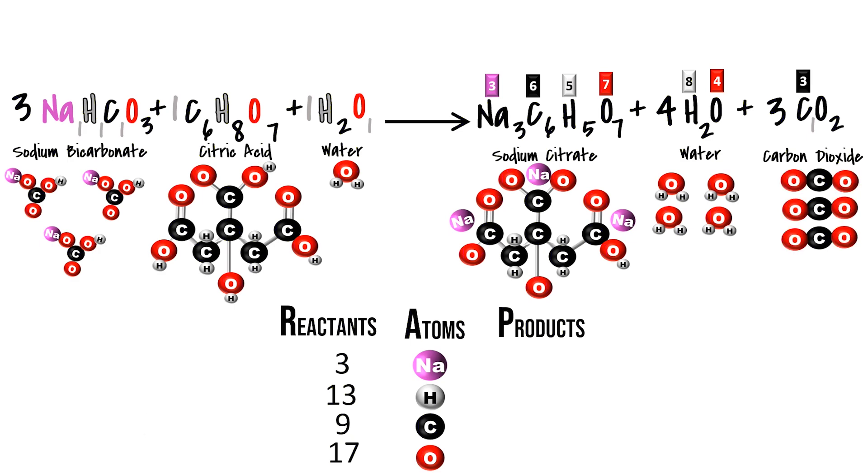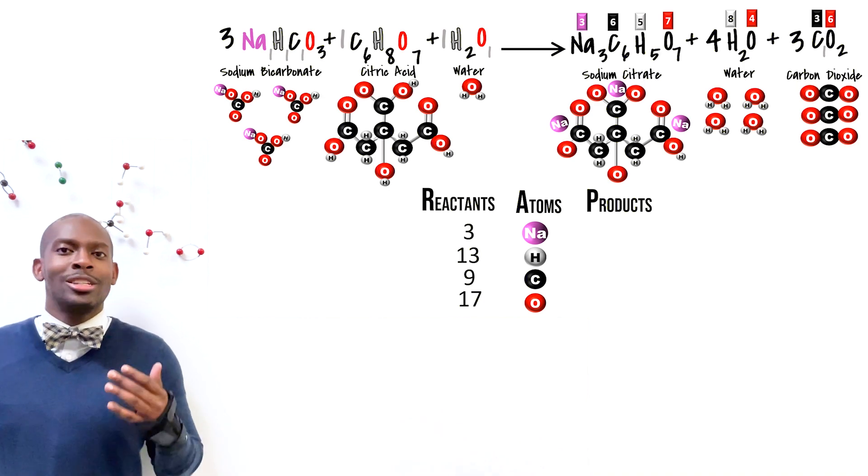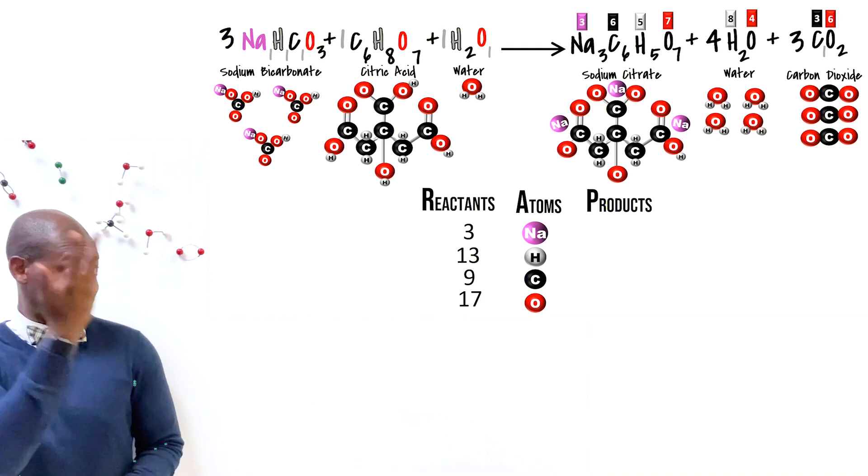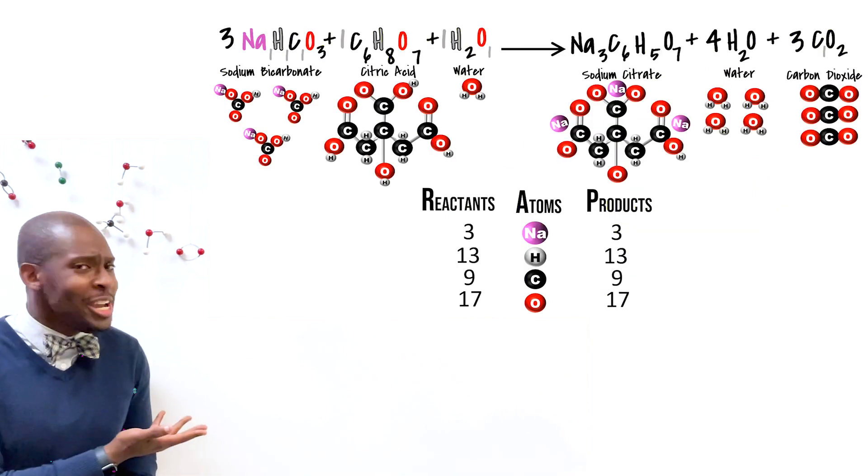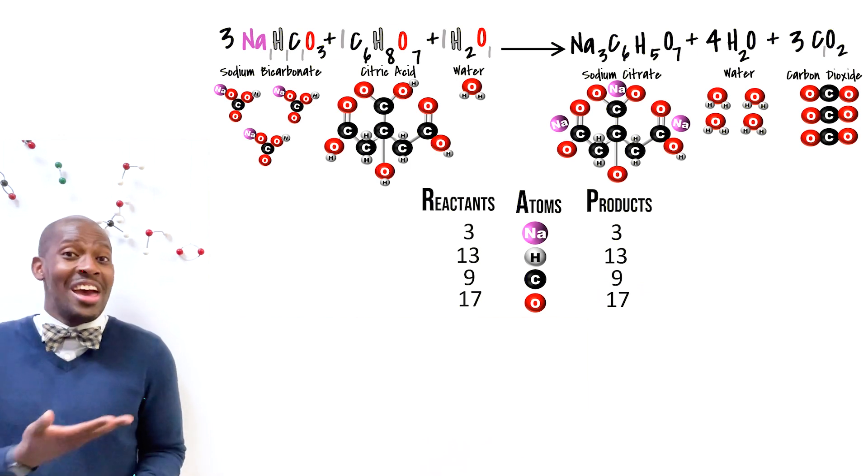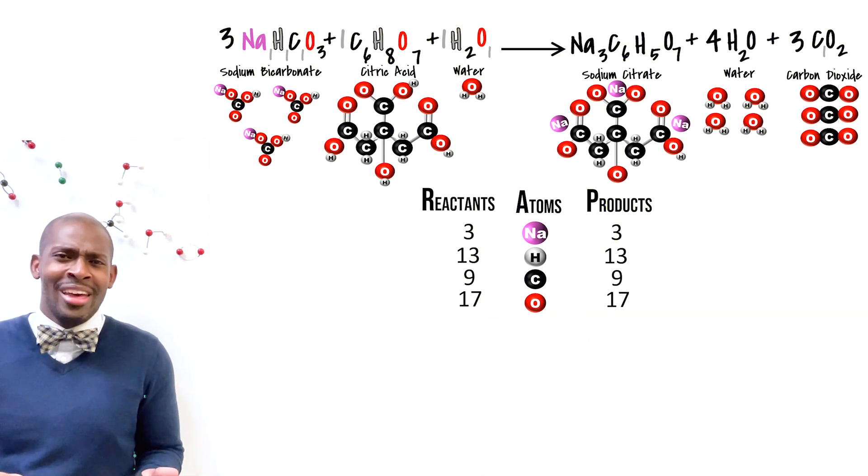And in those three carbon dioxide molecules, there are three carbon atoms and six oxygen atoms, giving us a grand total of three sodium atoms, 13 hydrogens, nine carbons, and 17 oxygen atoms. In the products we have the same amount of matter at the end that we had at the beginning. That means matter was conserved.